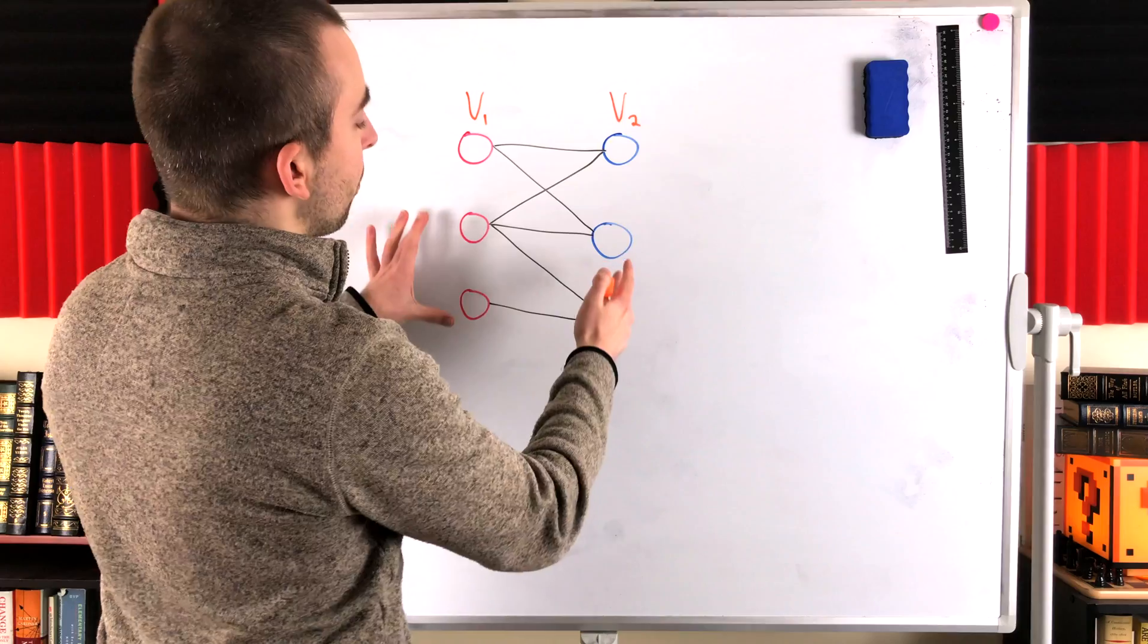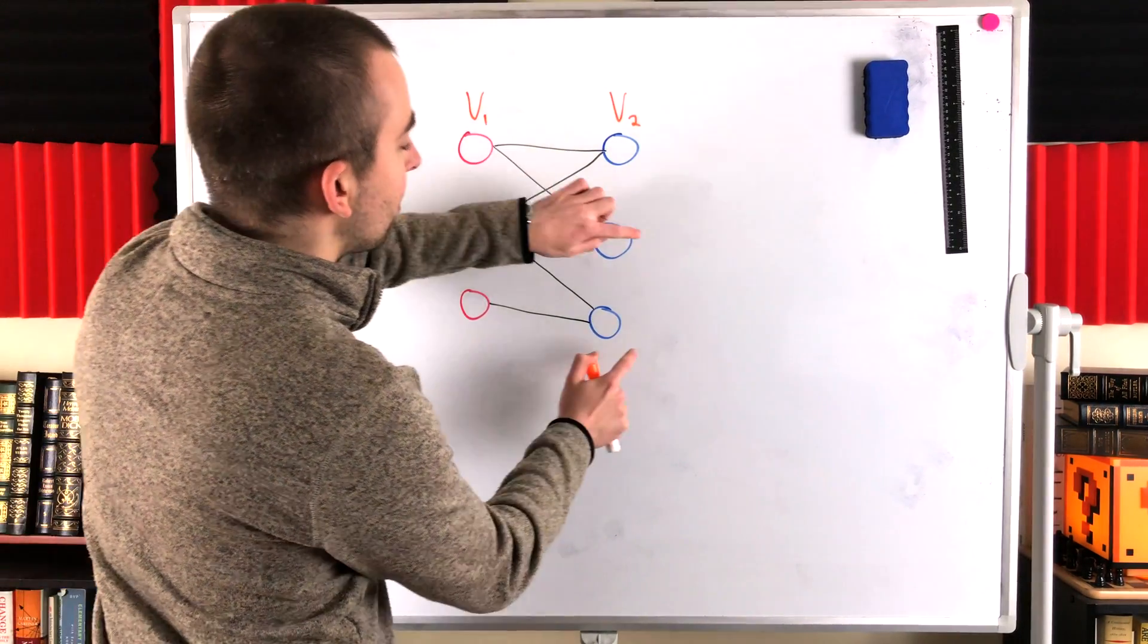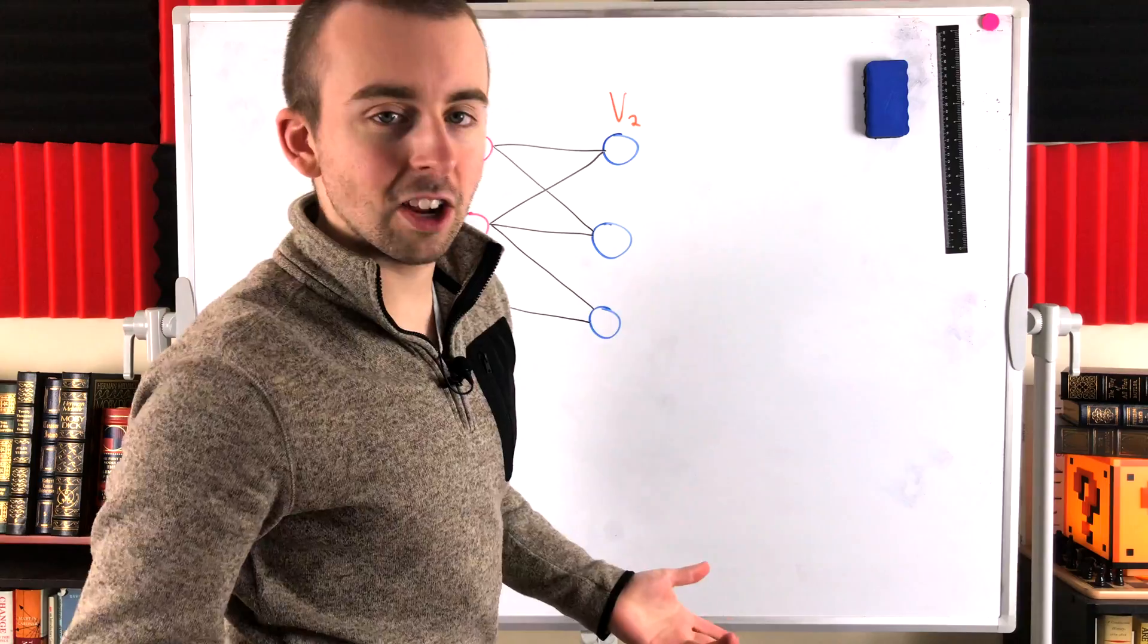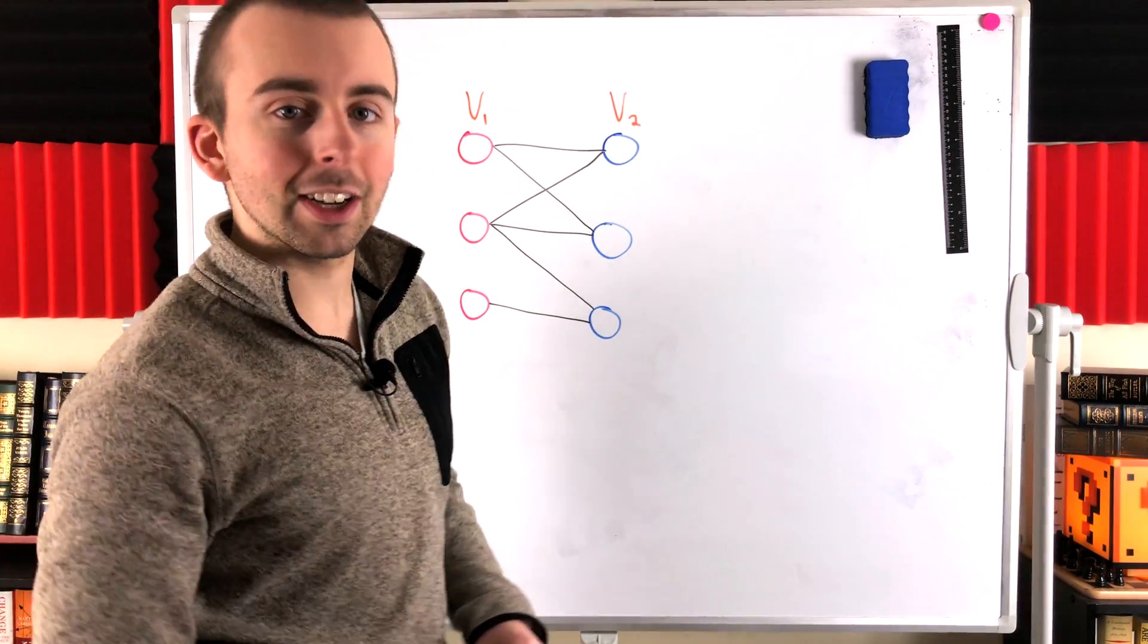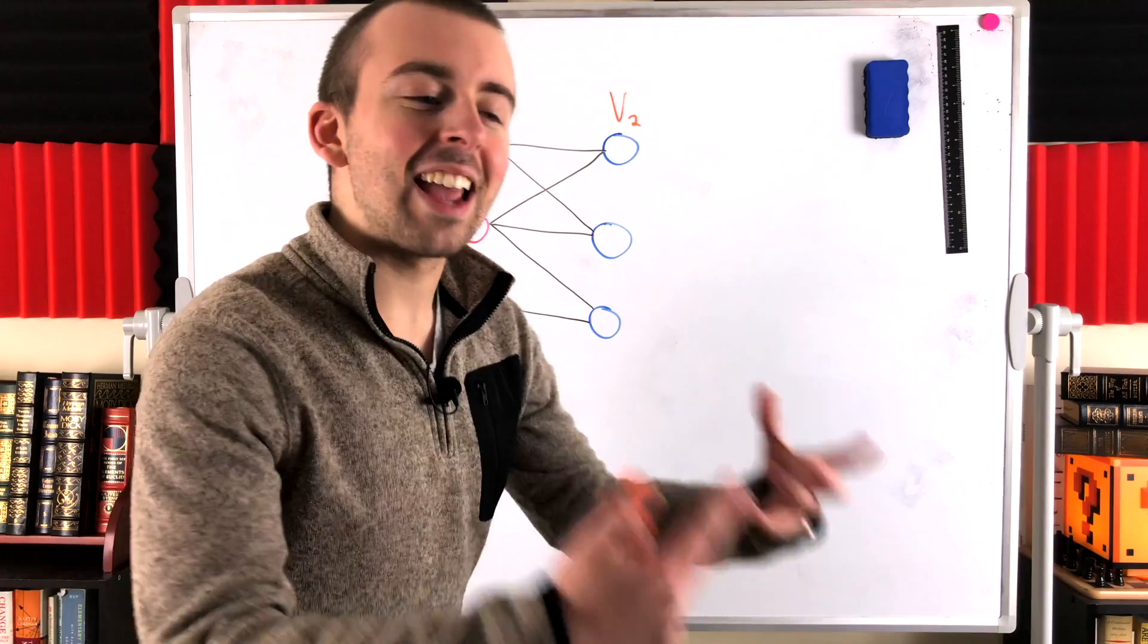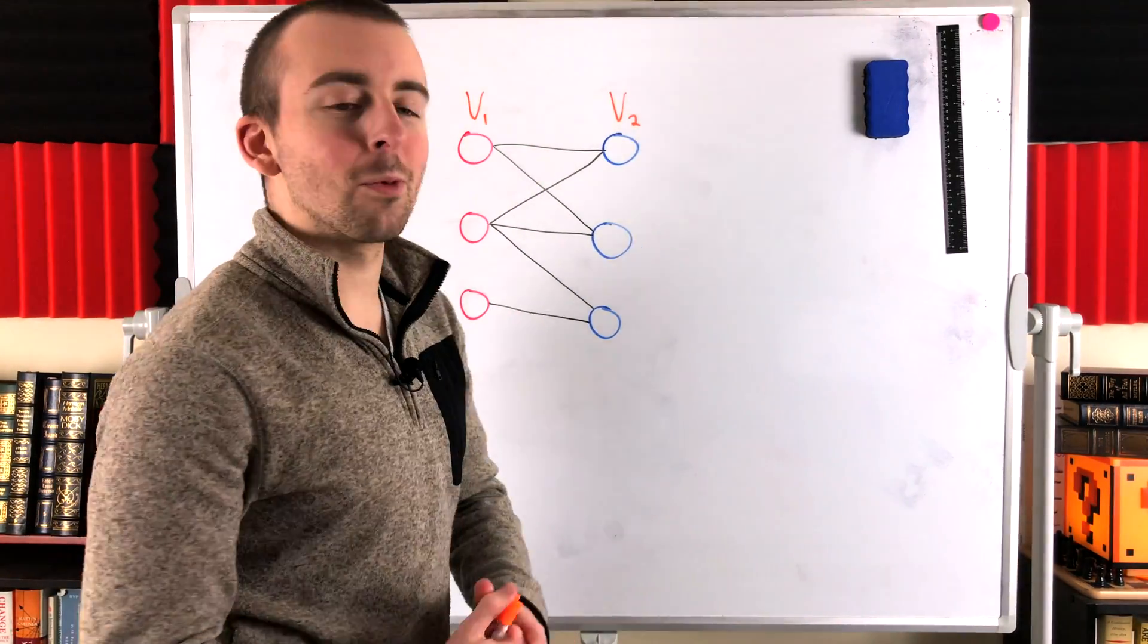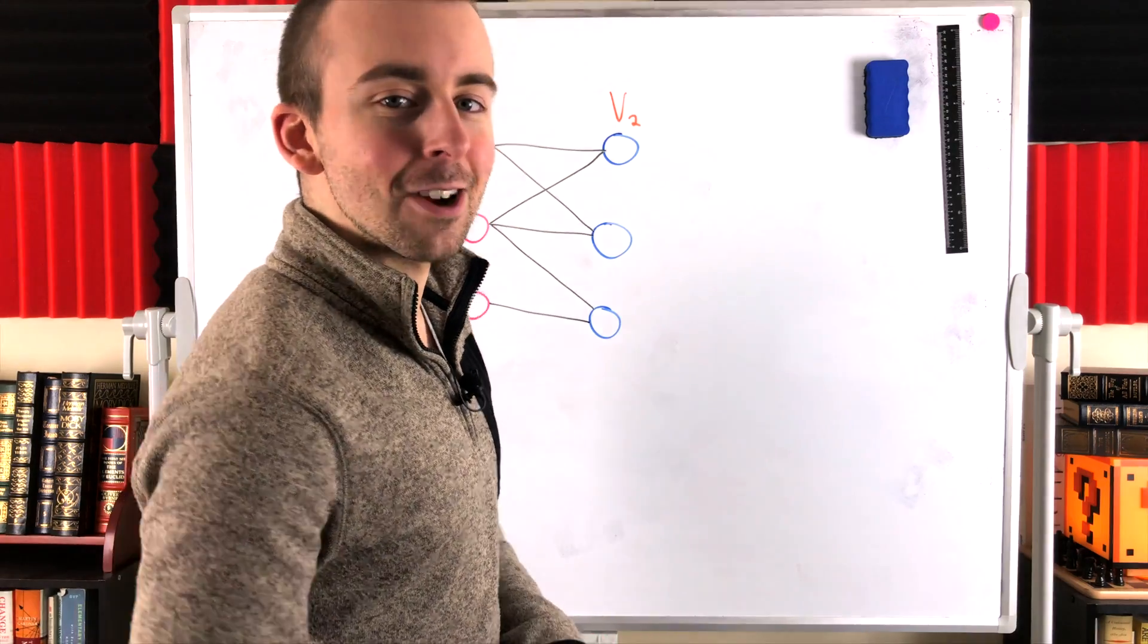They're called independent vertex sets. And of course bipartite graphs are not always handed to you with the partitioning already done. Sometimes you got to put in some work to figure out if they're bipartite or not.